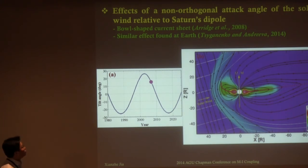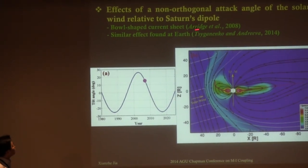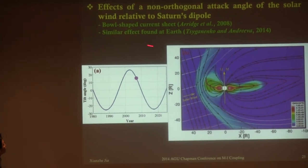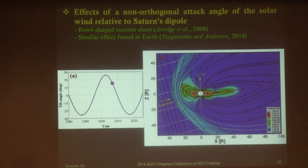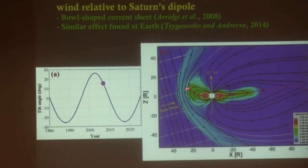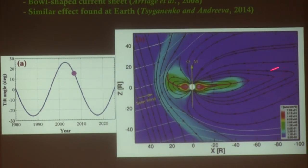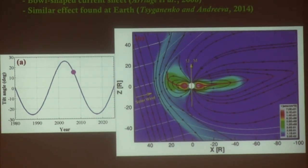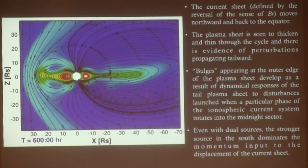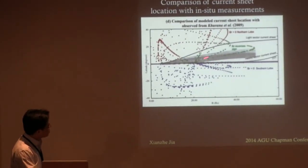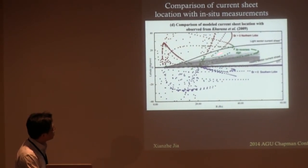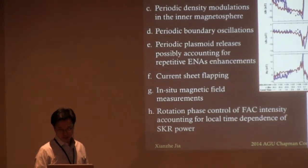One thing to point out is the bowl-shaped current sheet that George talked about yesterday, which we see in the Cassini data. A very similar effect has been recently seen in Earth's magnetosphere. When you put in a non-orthogonal solar wind attack angle in our simulation, you can reproduce very well this kind of bowl-shaped current sheet seen in the Cassini data. In addition, we see the flapping of the current sheet arising from the periodic modulations. We can compare the location of the current sheet with the observations, and it matches fairly well with what we see in the data.